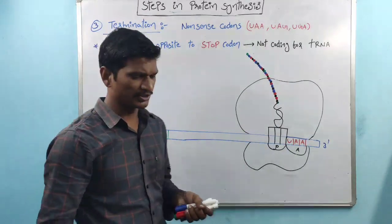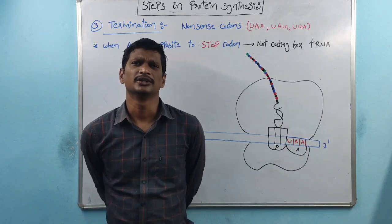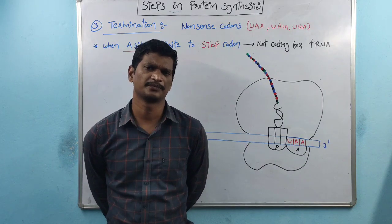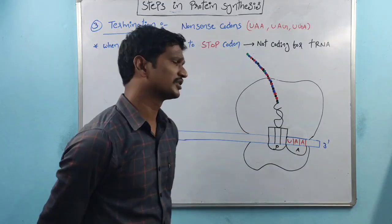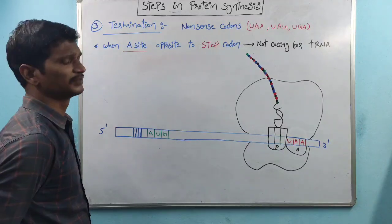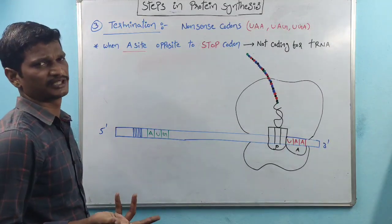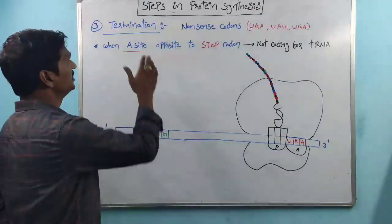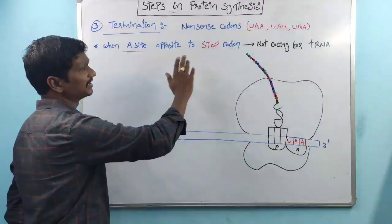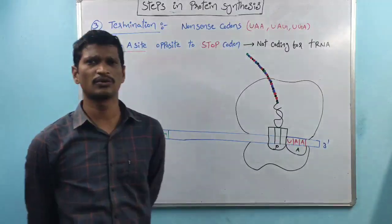Coming to the last step in the protein synthesis process: termination. Termination is nothing but stopping of protein synthesis. This is also called termination of translation, and it is done by the nonsense codons.